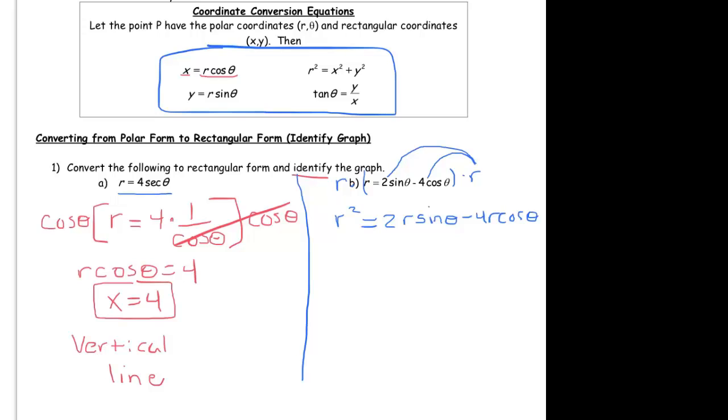Now I actually have some substitutions I can make. Because r squared, if you look up your identity, that's the same as x squared plus y squared. And r sine theta is just y. So this is 2y. And r cosine theta is x. So it's minus 4x.